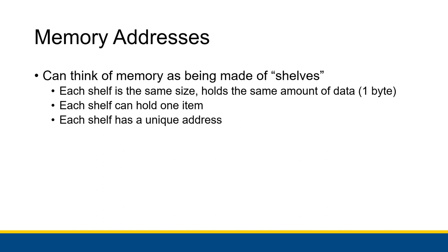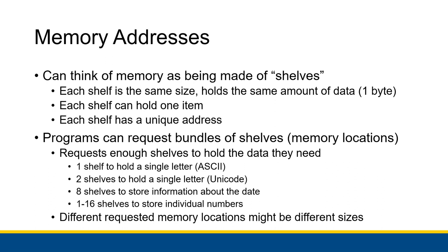Each shelf also has a unique address. Think of it like the Dewey Decimal System or house addresses — if you want to find something, all you have to do is look for the correct address and then get the data from that address. With random access, the computer doesn't have to look through all of the addresses until it finds the right one — it can go directly to the right shelf. Programs can actually request bundles of shelves — maybe four shelves together to store four bytes worth of information — and we're going to call these bundles memory locations.